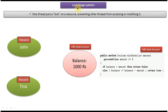Hi, today we will cover the lock design pattern. First we will see the explanation of lock design pattern. This is the explanation: one thread puts a lock on your resource, preventing other threads from accessing or modifying it. We will see one example so that you will understand this sentence easily.